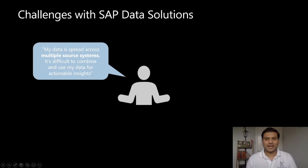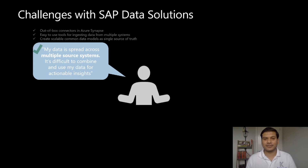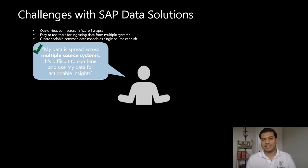We work with customers across multiple domains who face many challenges with their current SAP data solutions. I'm going to talk about three most common challenges and how we help them overcome these using the Azure platform. The first challenge is data spread across multiple source systems with no single source of truth for unified data analytics. By using out-of-box connectors in Azure Synapse, we have implemented data pipelines to ingest volumes of data from multiple systems, including SAP, into Azure. This data is then processed and stored as a common data model, which can easily scale to ever-increasing data volumes and serves as a single source of truth.